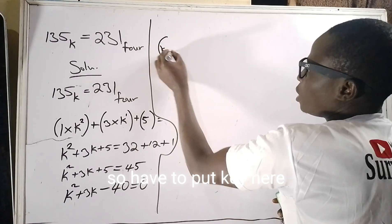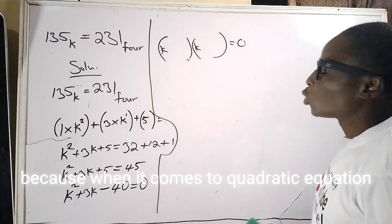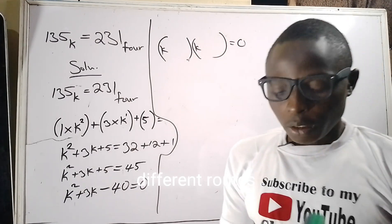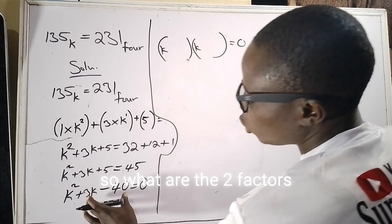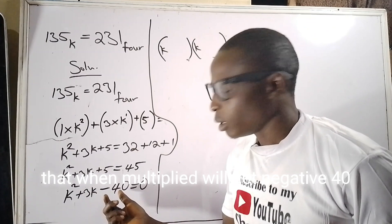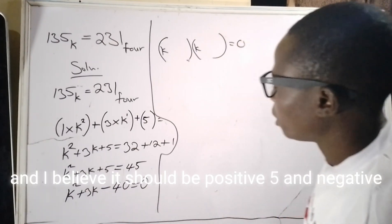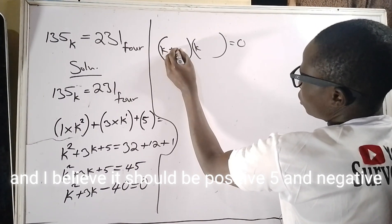Since the coefficient of k squared here is one, I will have to put k here, close the bracket, and put another k here, because when it comes to quadratic equations, we all believe that we must have two different roots. So what are the two factors that when multiplied will get negative 40 and when added or subtracted will get 3?